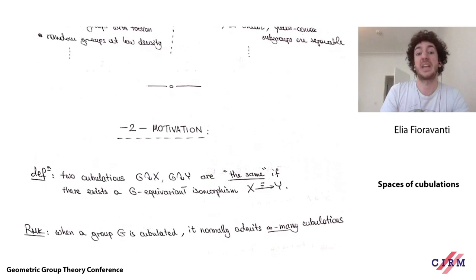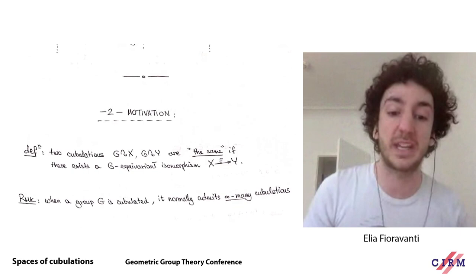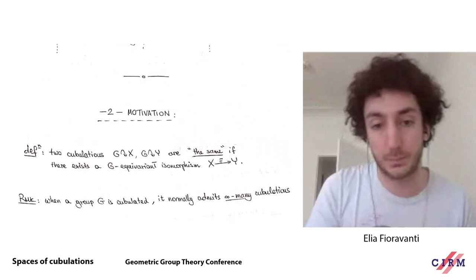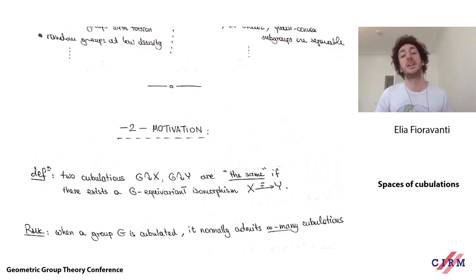These finitely many quasi-convex subgroups are going to be precisely the hyperplane stabilizers of some cubulation. This exemplifies the flexibility: if you're cubulating a group this way and you have your infinitely many subgroups, you know finitely many suffice, but you can always add more. You're still going to get a cubulation by the work of Sageev — no matter how many quasi-convex subgroups you throw in, as long as you're using finitely many, you'll still be co-compact and proper.